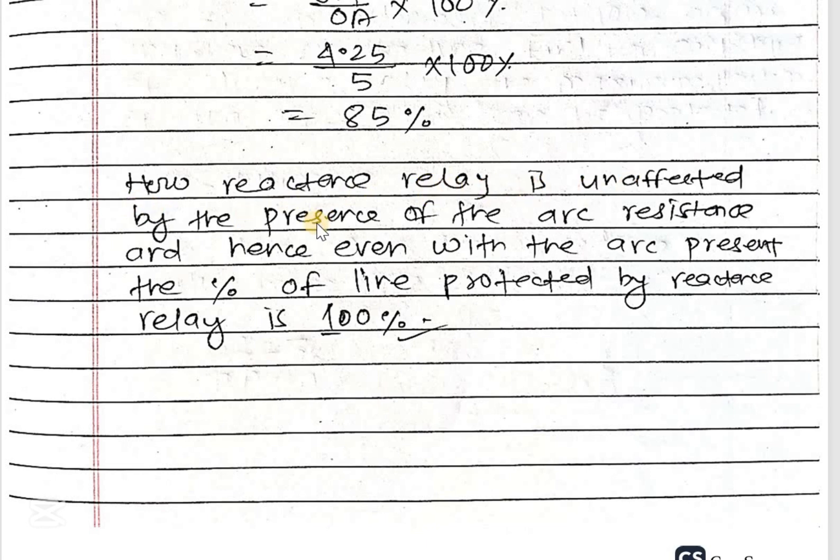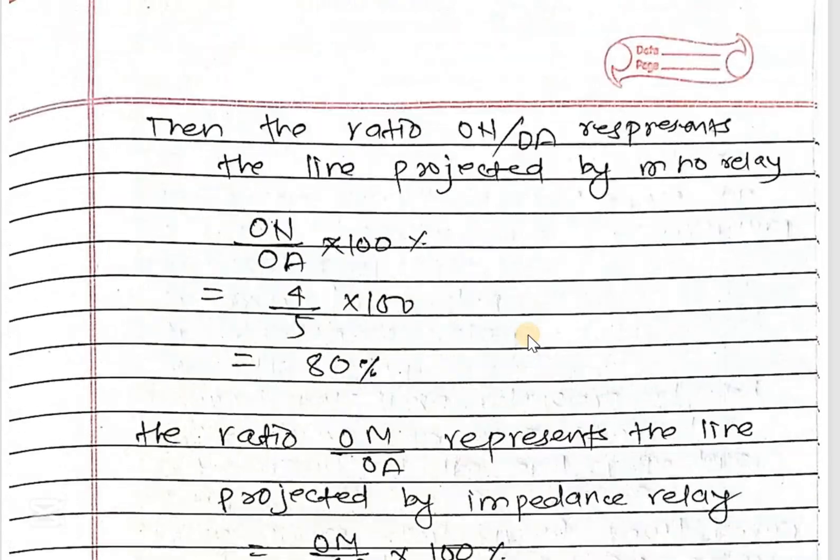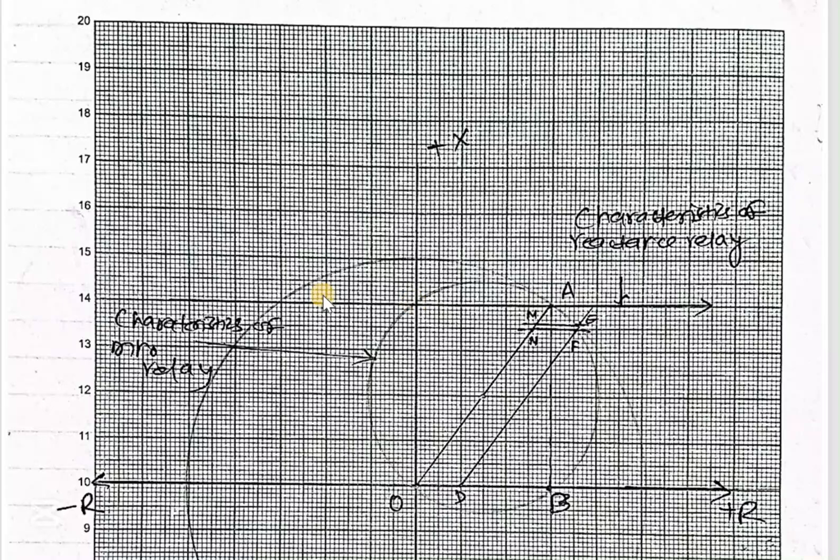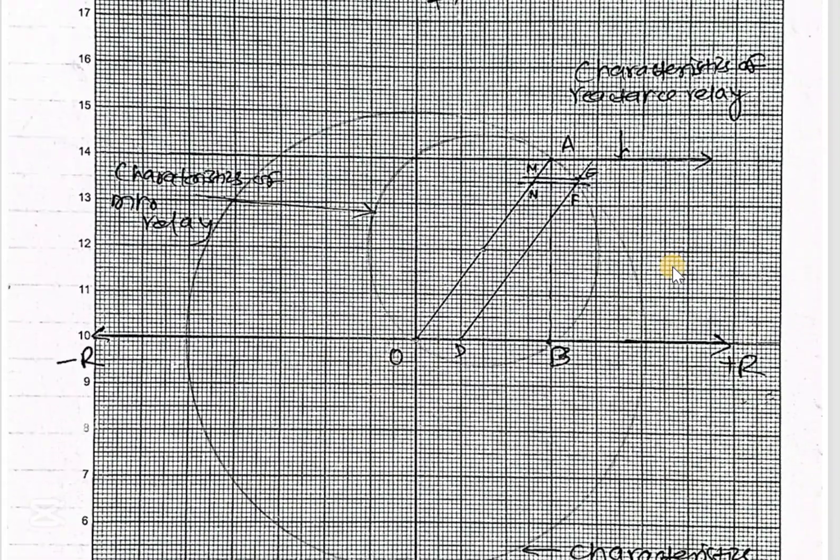Now the reactance relay is unaffected by the presence of arcing resistance, and hence even with the arc present, the percentage of the line protected by reactance relay is 100 percent. This one is the characteristic of reactance relay: 100 percent.